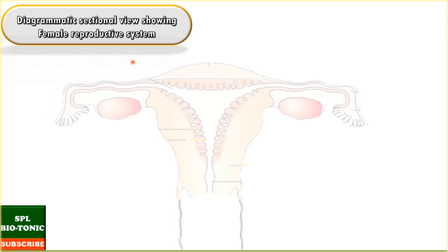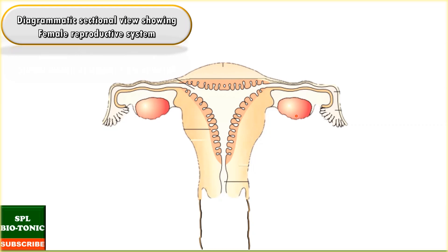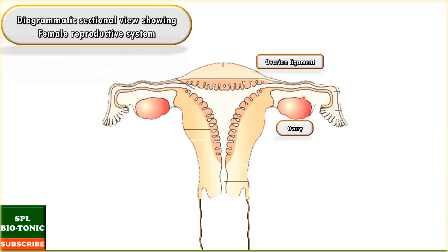The primary sex organs are ovaries, as they produce the female gamete, that is ova. These ovaries are present in the abdominal cavity near the kidneys. They are 2 to 4 cm in length. Ovaries are attached to the abdominal wall by ligaments to keep them in position. The ovarian ligament attaches ovaries to the uterus. They produce female gametes and also produce various hormones such as estrogen, progesterone, relaxin, etc.